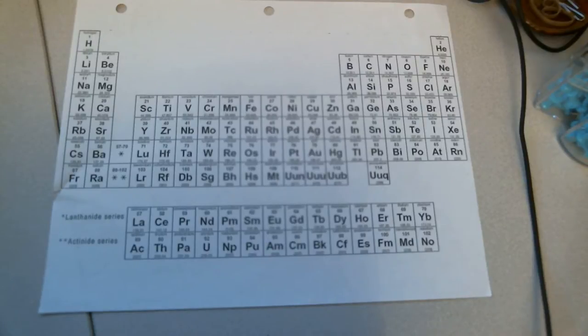Mendeleev started looking for patterns. He found that there were certain groups of elements that had properties that were similar. So he started aligning these elements in vertical rows, so that means up and down, and he took these by mass number and put them from left to right.